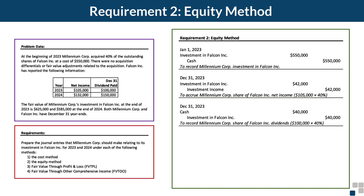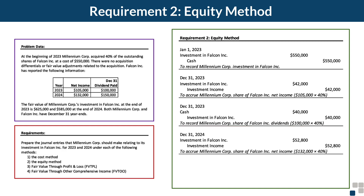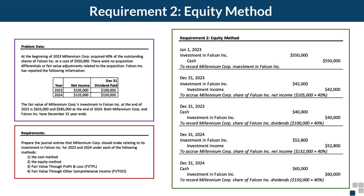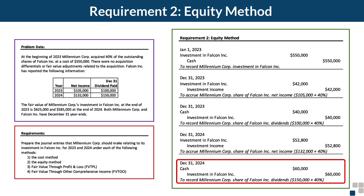Also on December 31st, 2023, Falcon pays its dividend. Under the equity method, Millennium does not record this as investment income but instead records its proportionate share as a reduction in the investment account — debit cash and credit investment in Falcon for $40,000. Fast-forwarding to the end of 2024, 40% of $132,000 net income is $52,800, recorded as a debit to investment in Falcon and credit to investment income for $52,800. Then for the $150,000 dividend, Millennium debits cash for $60,000 and credits the investment account for $60,000.